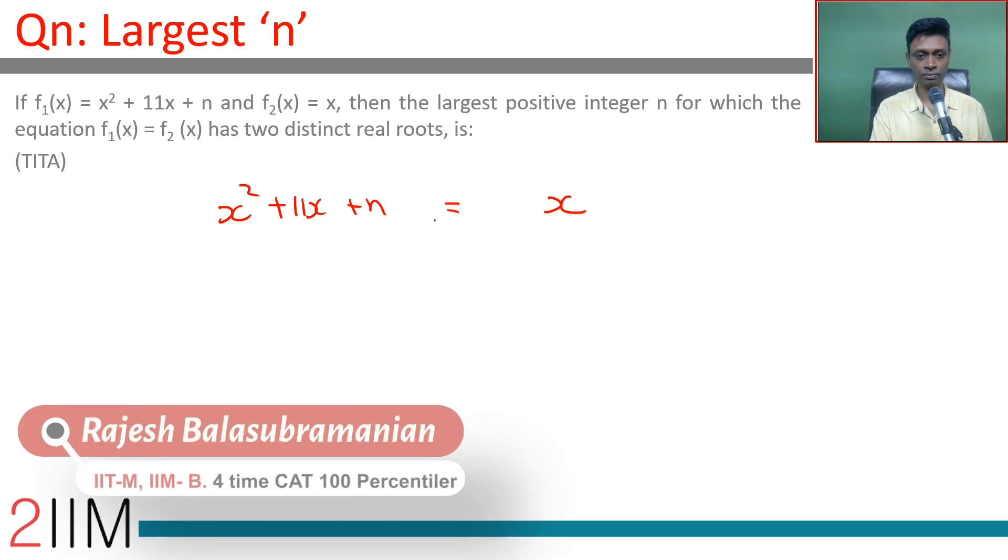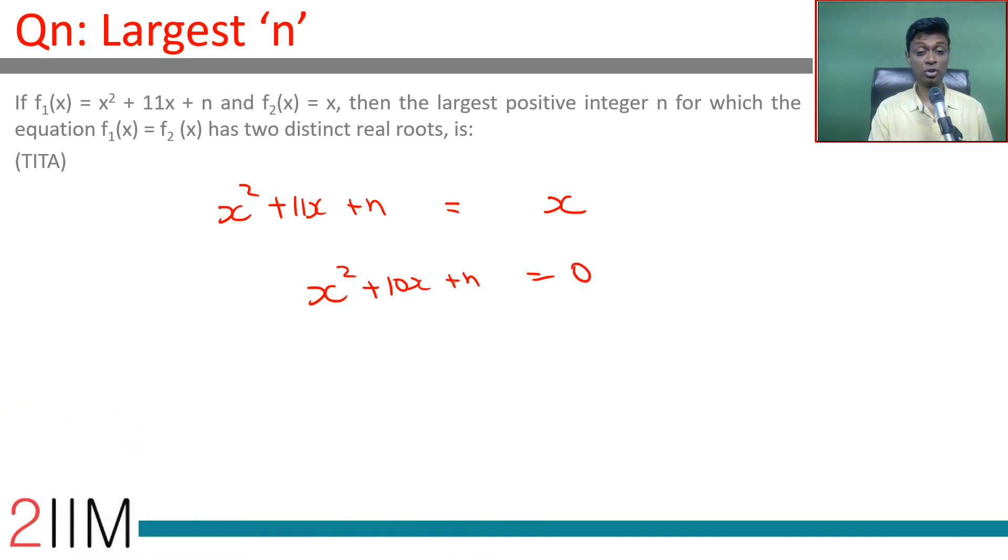should be equal. Then we have x square plus 10x plus n equal to 0. This should have two distinct real roots, or the discriminant should be greater than 0. Discriminant is b square minus 4ac, which is 10 square minus 4n